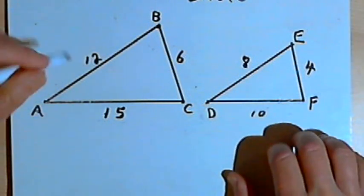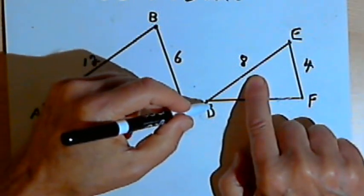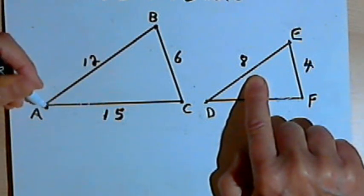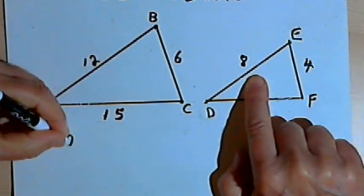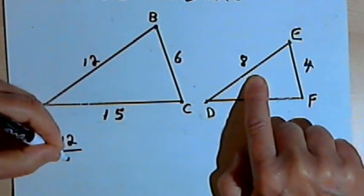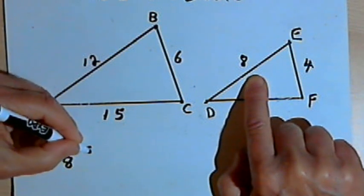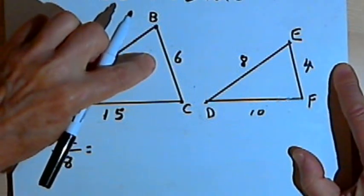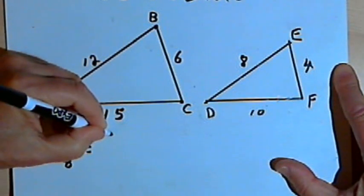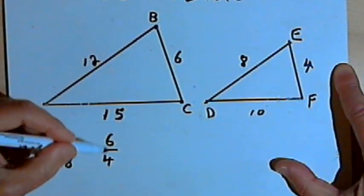I'm going to take a pair of corresponding sides. Side AB corresponds with side DE, and I'm going to make a ratio of their sides. Side AB is 12 units long and side DE is 8 units long, so the ratio of their sides is 12 over 8. Then I'll take another pair of corresponding sides: side BC and side EF. Side BC is 6 units long and side EF is 4 units long, so the ratio is 6 over 4.